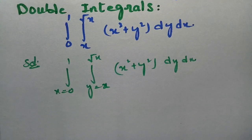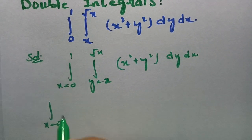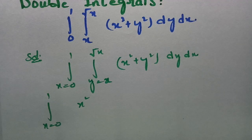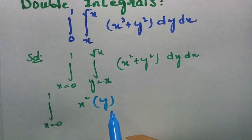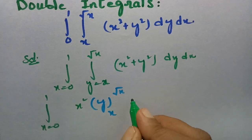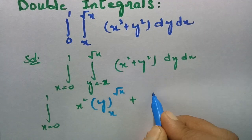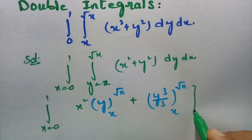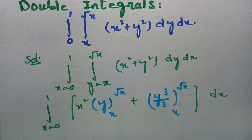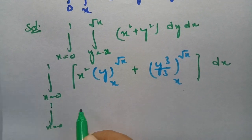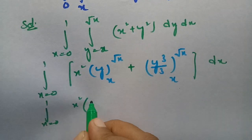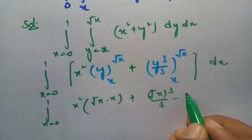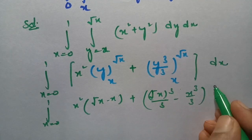First I have to integrate with respect to y. The x limits are from 0 to 1. The integral of dy is y, so we get x square times y between the limits x to root x, plus the integral of y square which is y cube by 3 between the limits x to root x, all of dx. Substituting the upper limit minus lower limit gives root x minus x, and root x whole cube by 3 minus x cube by 3, of dx.